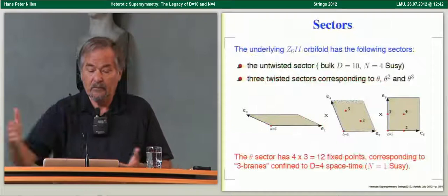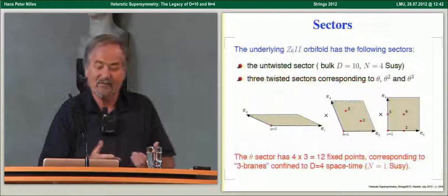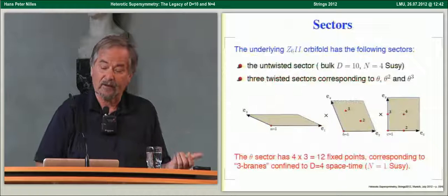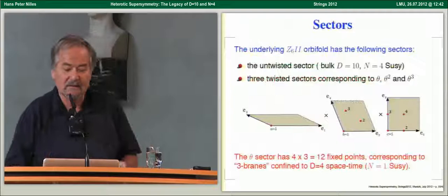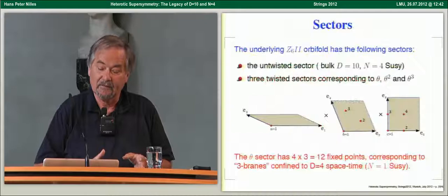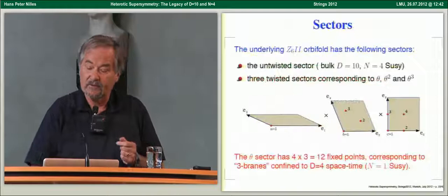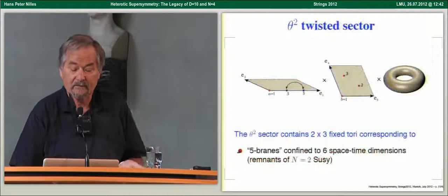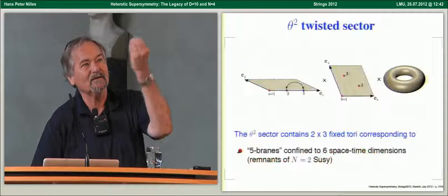The Z6-II orbifold has an untwisted sector (the bulk) and three twisted sectors under the twist θ, a 60-degree rotation. The untwisted sector would, at tree level without twisting, have N=4 supersymmetry. In the first twisted sector θ, there are 12 fixed points across the three tori: G2 × SU(3) × SO(4). The θ² twisted sector corresponds to fixed tori — 2×3 fixed tori — where an underlying N=2 supersymmetry would apply. The same is true for the θ³ sector, which also has fixed tori.